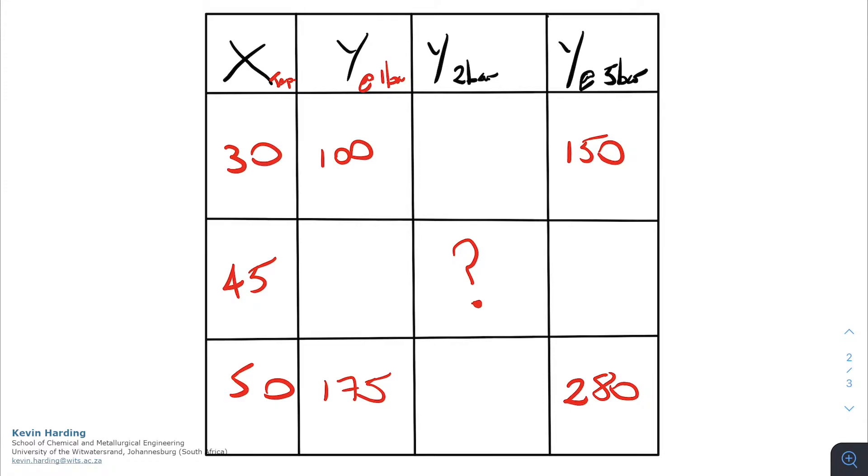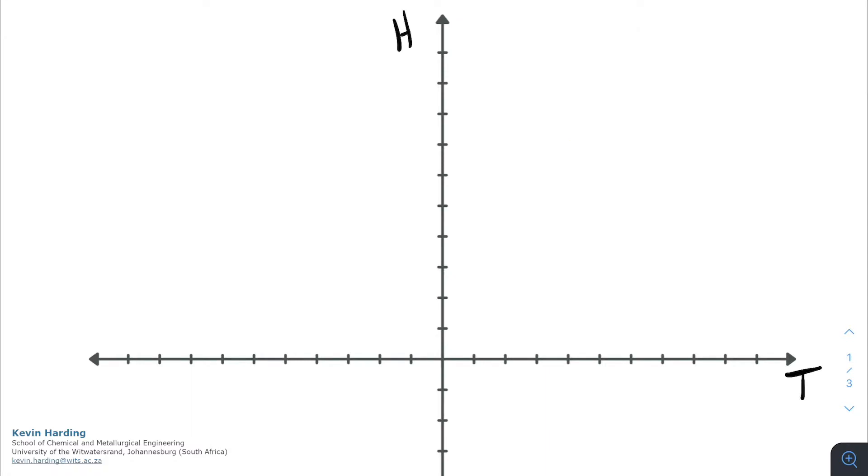Before we start, let's draw this graphically and fill in a value here of 280 for our final given value at five bar and 50 degrees Celsius. Here we have the graph of temperature versus enthalpy. At 30 degrees Celsius, at pressure of one bar we had a value of 100 enthalpy. So there we had our first point in the top left corner.